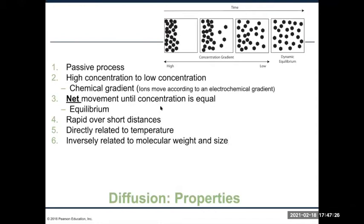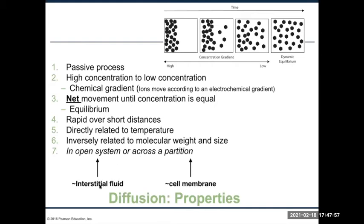Diffusion rate is inversely related to molecular size — the bigger the molecule, the slower it diffuses. Very small molecules move rapidly from one area to another; bigger ones move slowly. This diffusion can occur across an open space — like the interstitial fluid between blood vessels and cells — or it can occur across a partition, which in our case means a cell membrane.